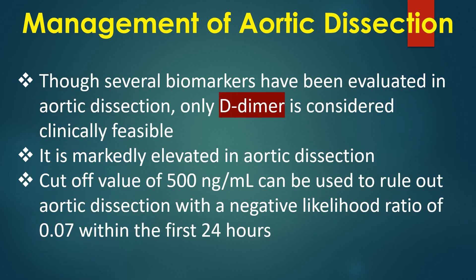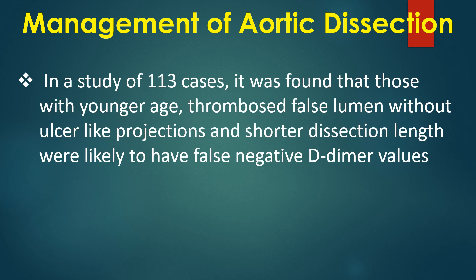Though several biomarkers have been evaluated in aortic dissection, only D-dimer is considered clinically feasible. It is markedly elevated in aortic dissection; a cut-off of 500 ng/mL can rule out aortic dissection with a negative likelihood ratio of 0.07 within the first 24 hours. In a study of 113 cases, younger age, thrombosed false lumen without ulcer-like projections, and shorter dissection lengths were associated with false-negative D-dimer values.